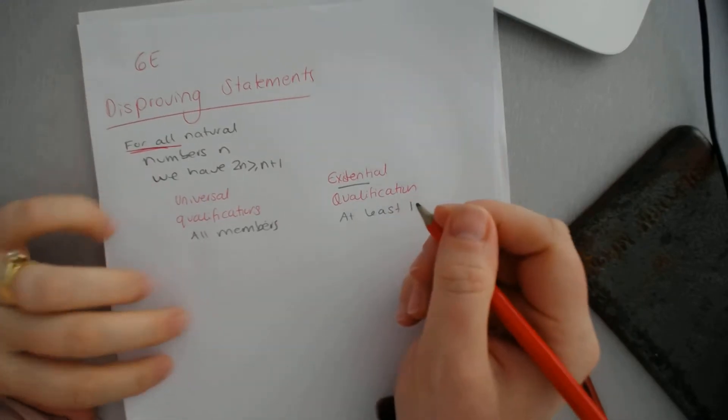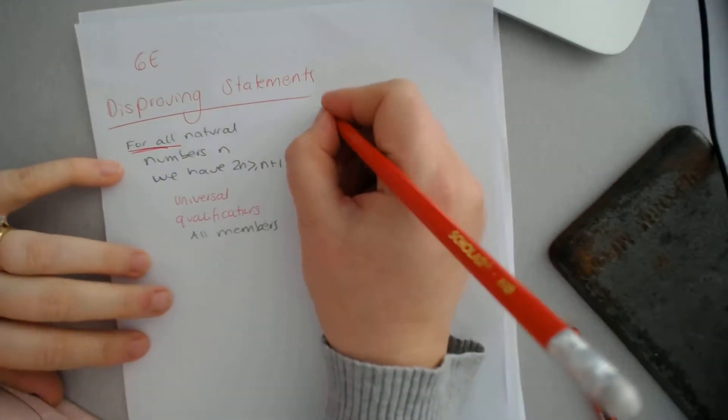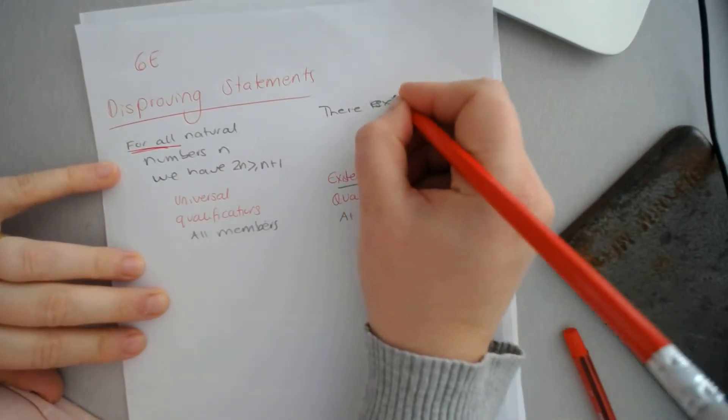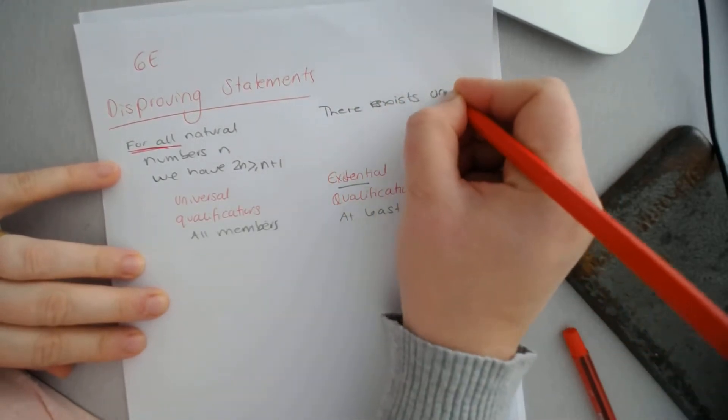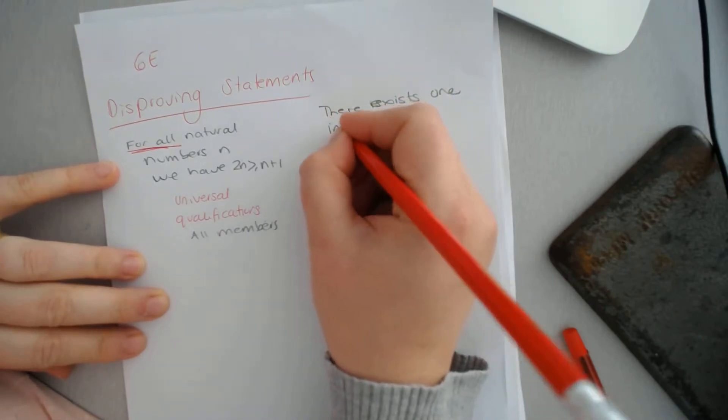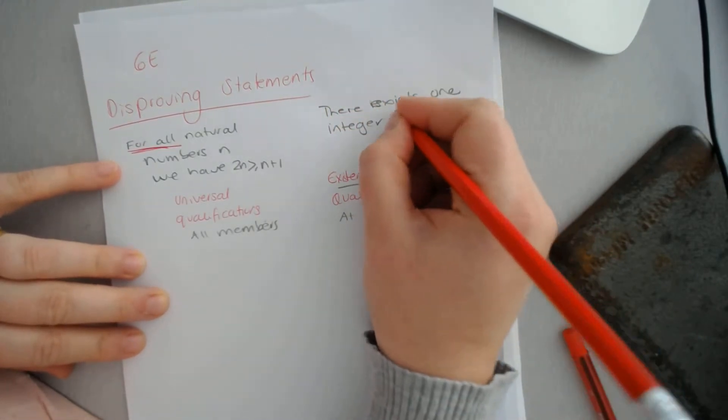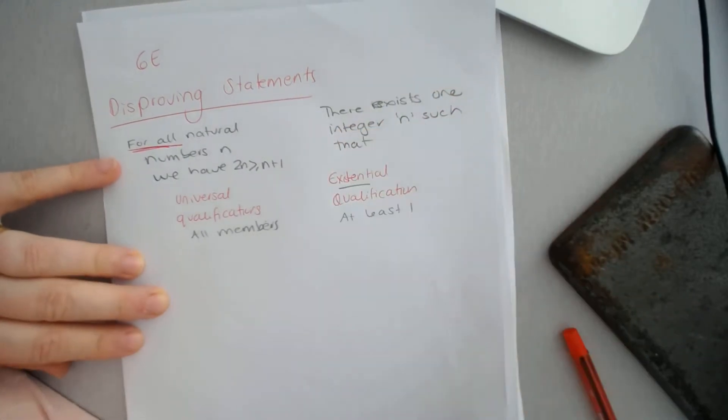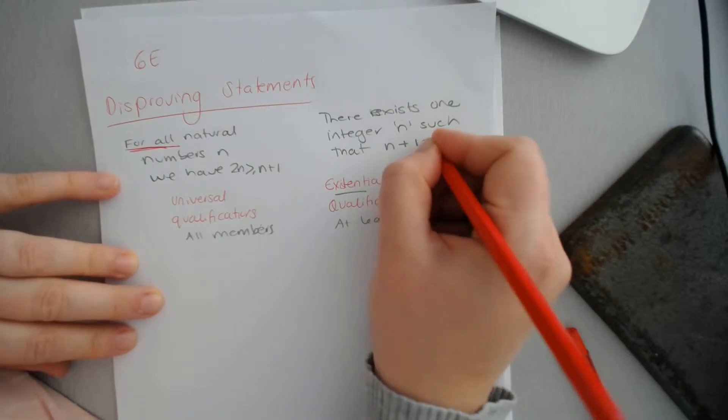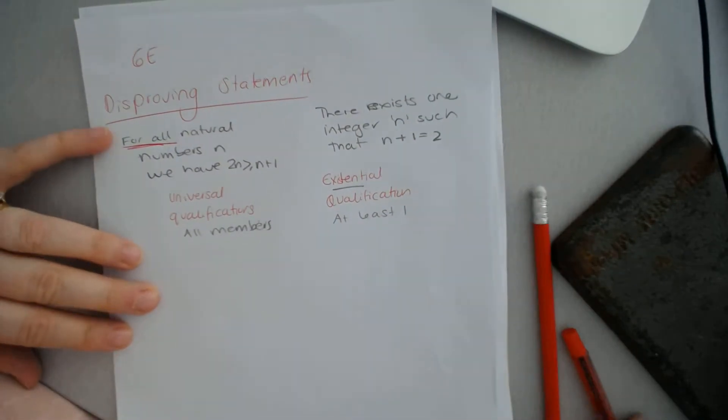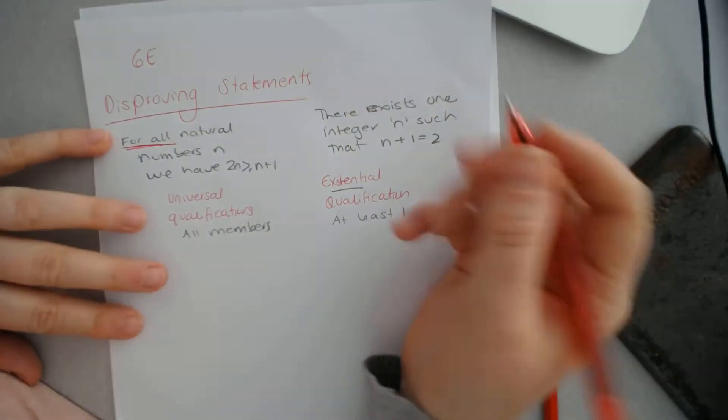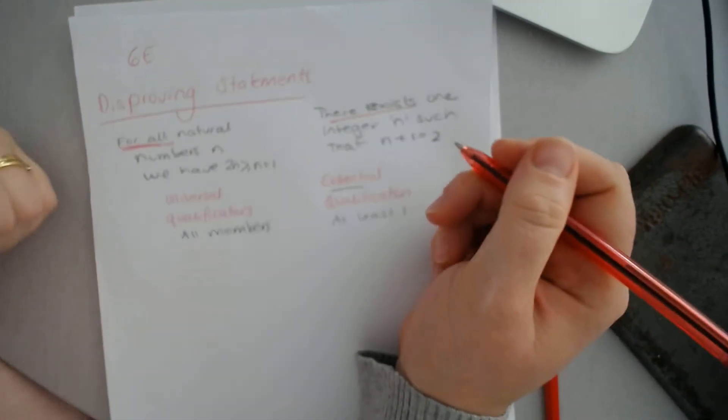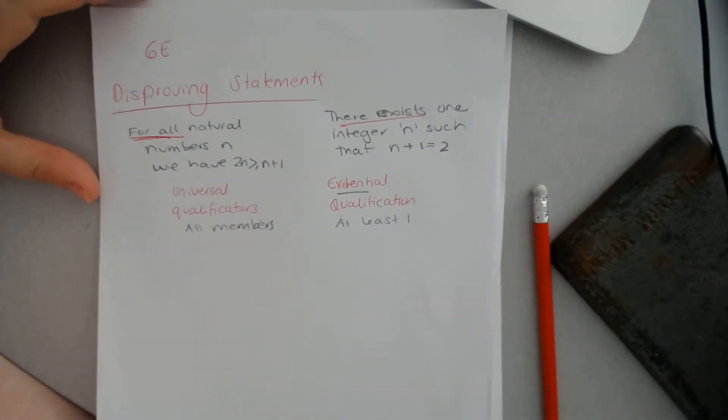Existential qualification is at least one. So the example might be: there exists one integer n such that n plus 1 equals 2. The existential bit which tells us is that there exists, so that's what we're looking at, at least one. And that's what we want to be able to prove.